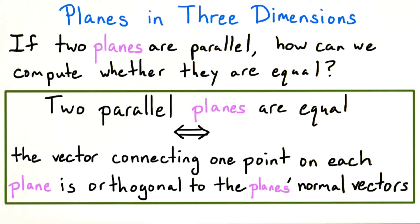Similarly, if two planes are parallel, that is, they have parallel normal vectors, then we can pick a point on one plane and another point on the other. If the vector connecting them is orthogonal to the plane's normal vectors, then the two planes must be the same.